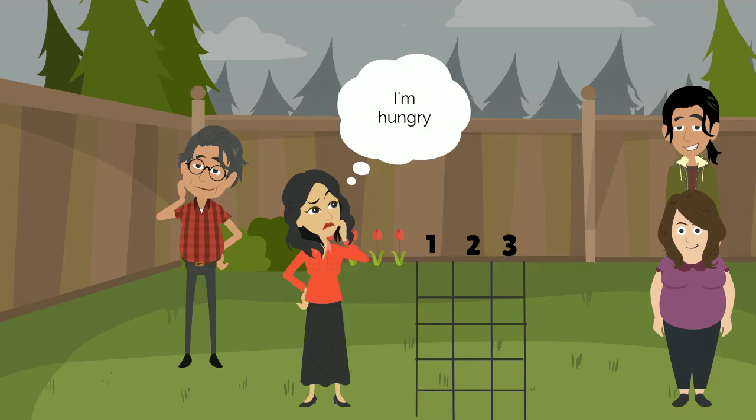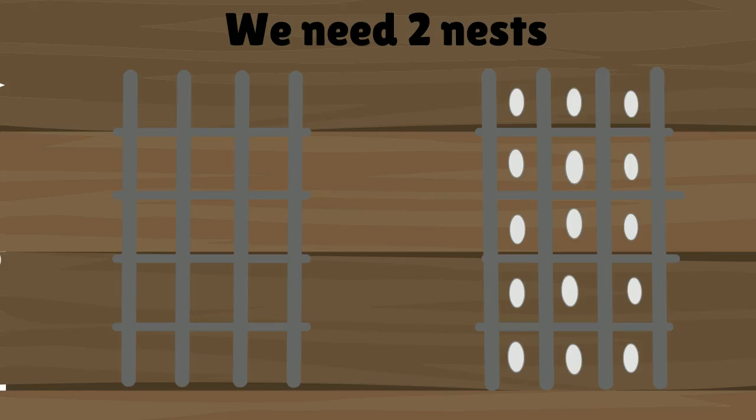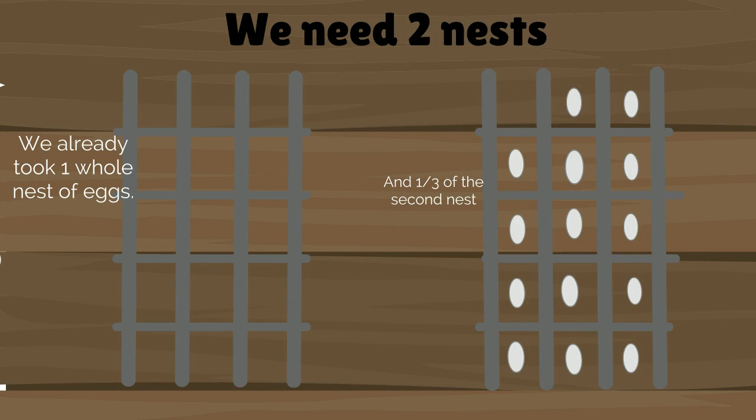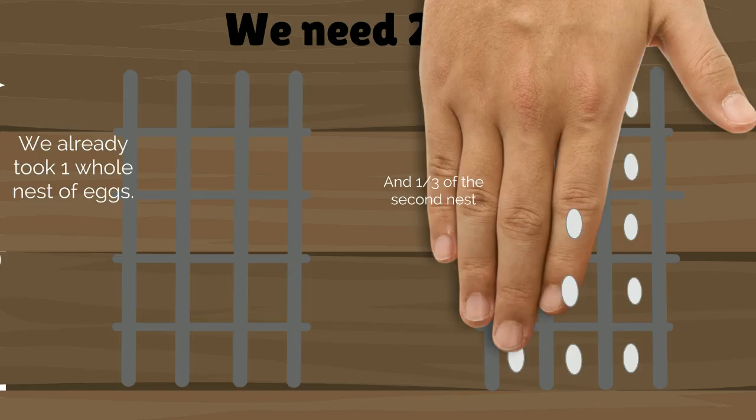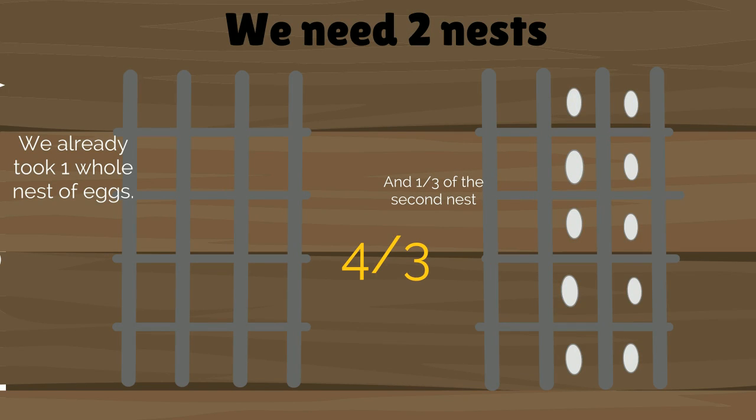So that means we need 2 nests. We have already taken 1 whole nest of eggs and now 1/3 of the 2nd nest. That would be 4/3, which also equals 1 and 1/3.